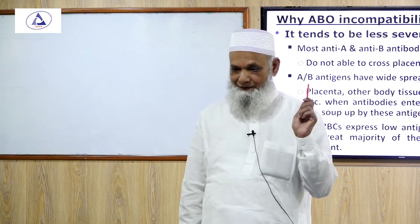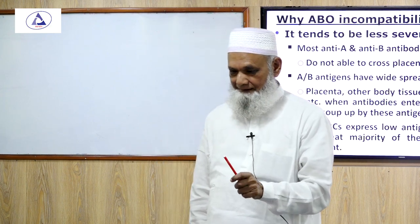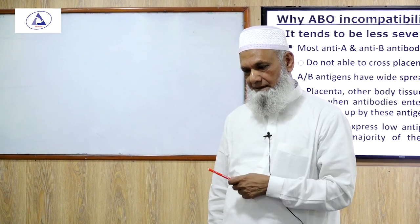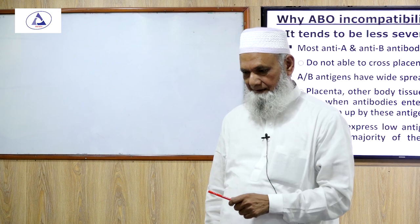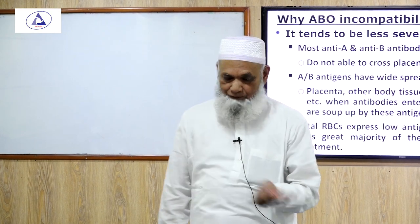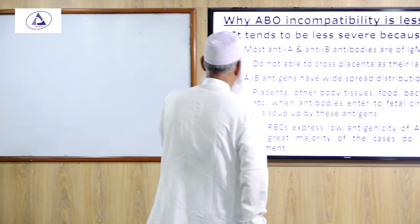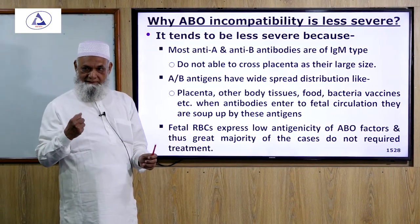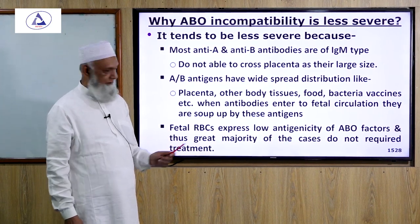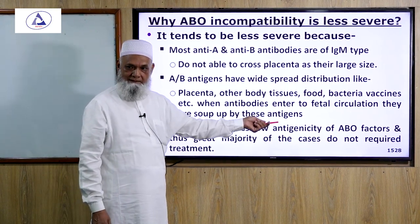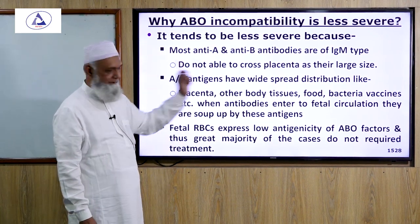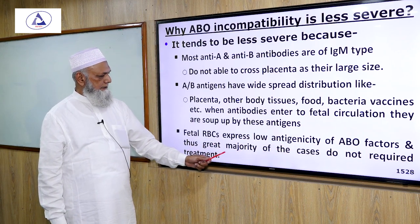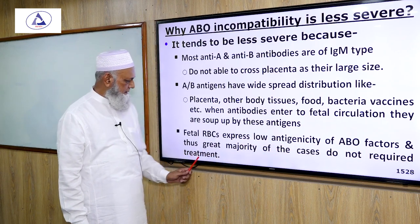Fetal cells carry A and B ABO type substances on their tissues. There is a wide environmental distribution of these antigens. Additionally, fetal red blood cells express low antigenicity of ABO factors, and thus the great majority of cases do not require treatment.